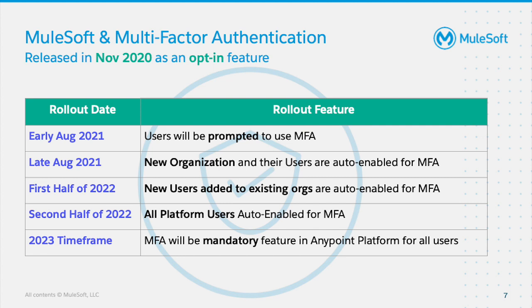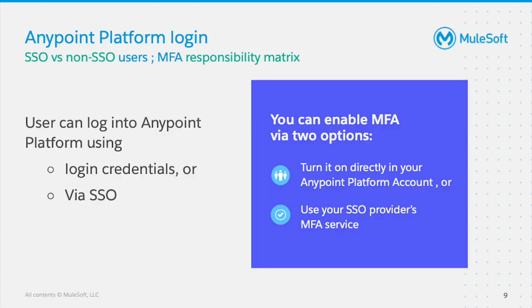Let's understand the different ways to set up users to access Anypoint platform and identify who is responsible for setting up MFA. Access to Anypoint platform is provided via either login credentials or via single sign-on. The party responsible for implementing MFA differs based upon the login method. For non-SSO users, turn on MFA directly in the Anypoint platform itself. For SSO users, use the SSO provider's MFA service to turn it on. Note that the rest of the video focuses on how to enable MFA for non-SSO users.